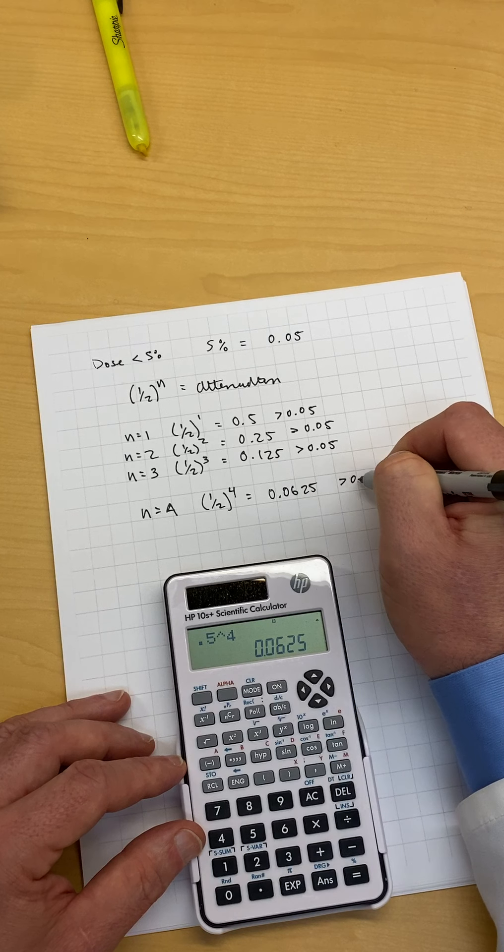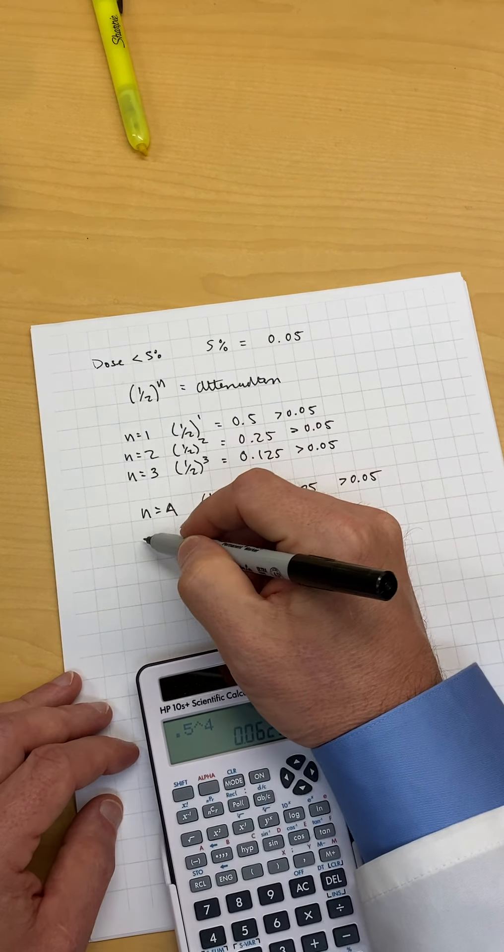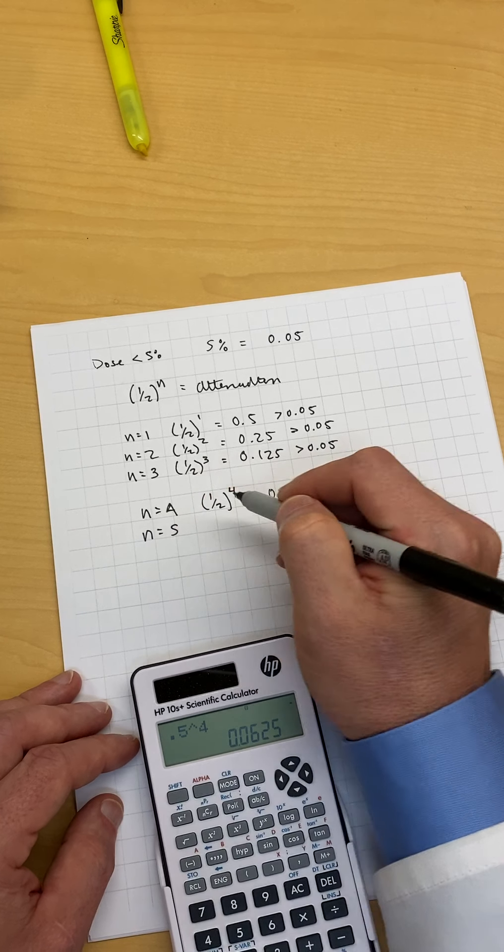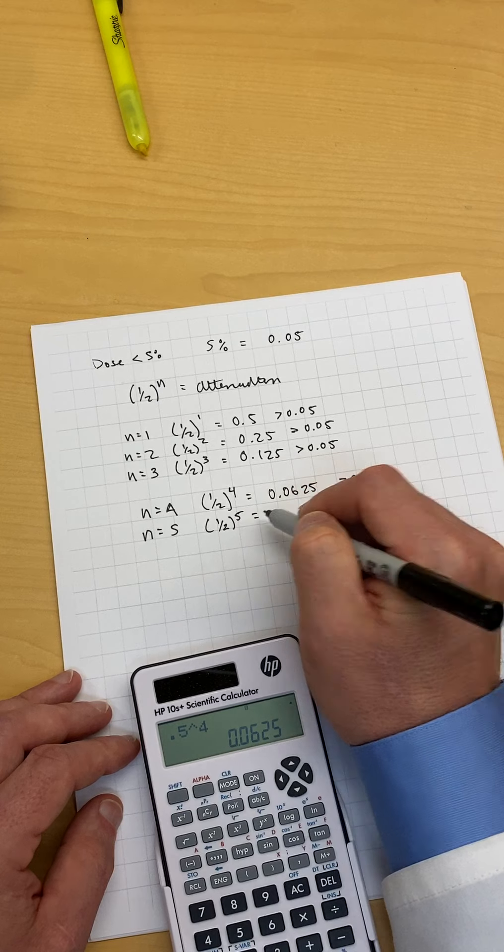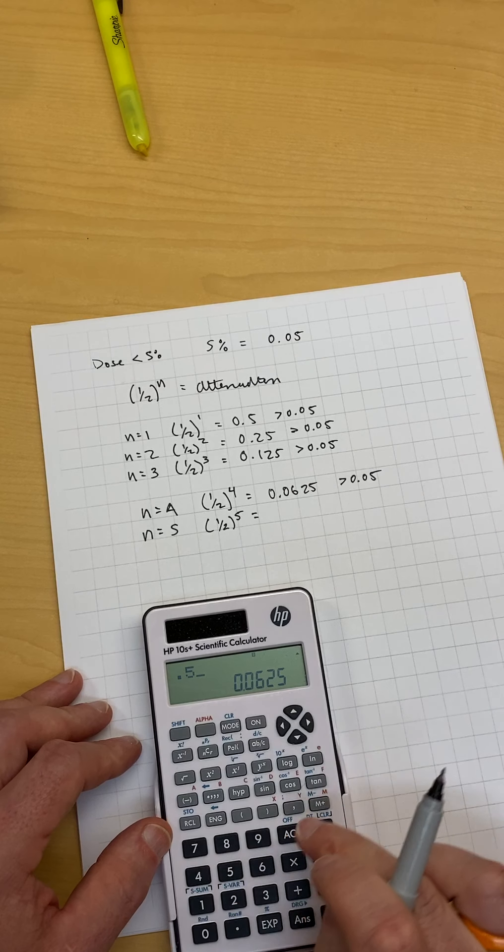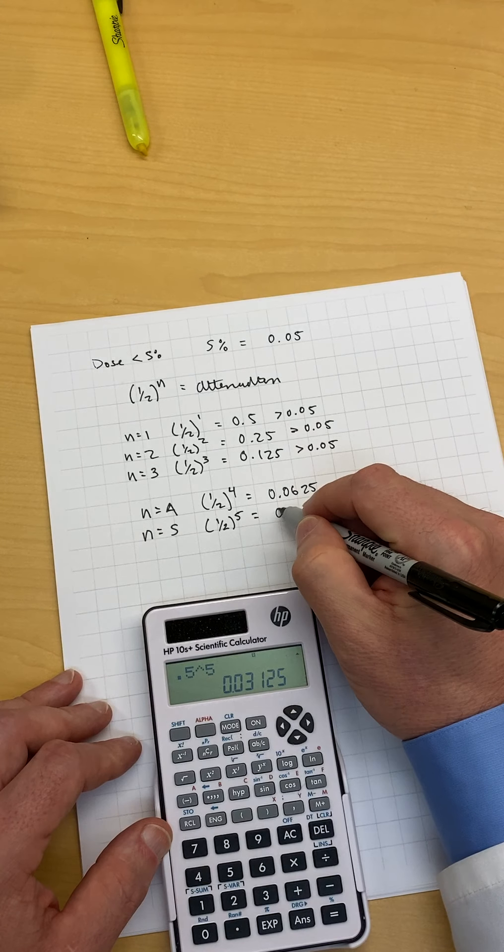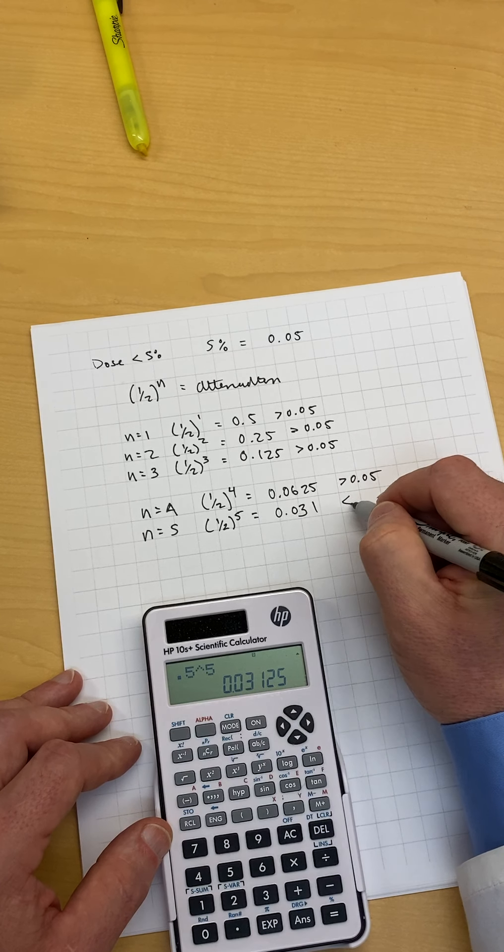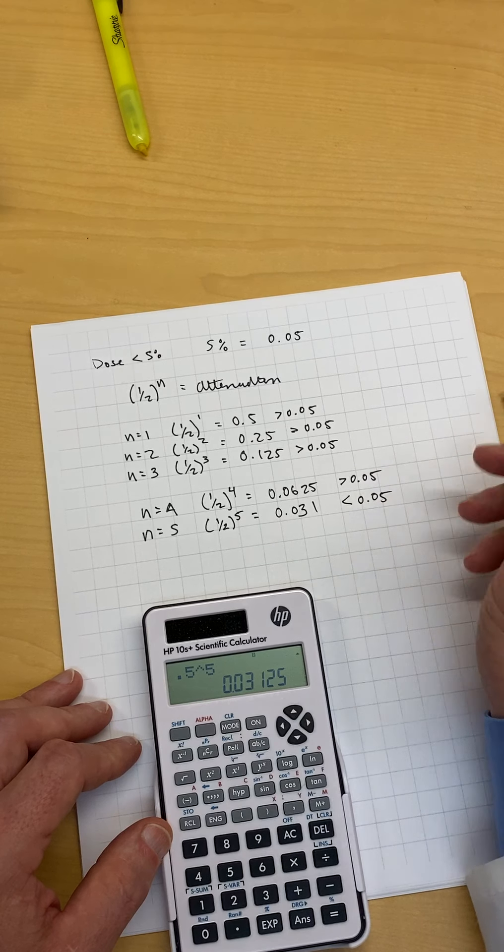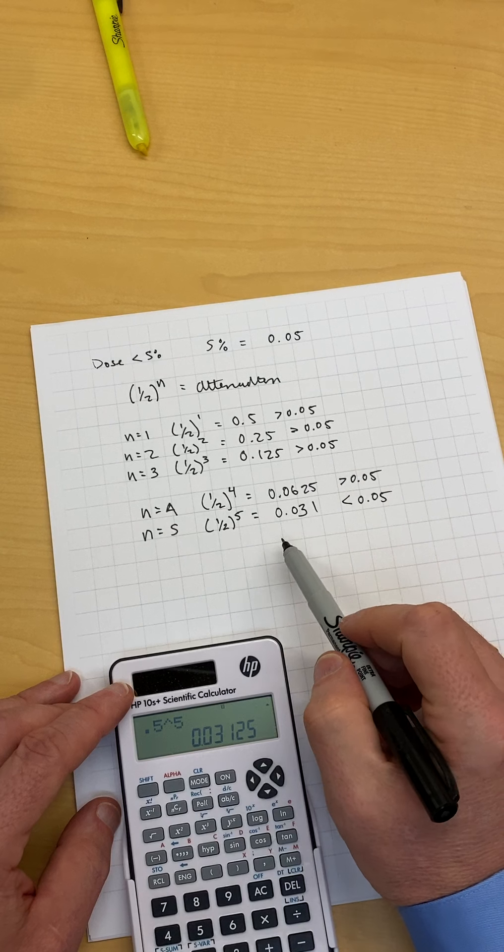0.0625, which is still greater than 0.05, five percent dose. N equals five, I think we're going to hit it this time. To the fifth equals: 0.5 x-y to the five equals 0.031, which is less than 0.05.